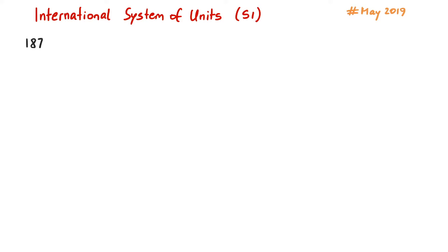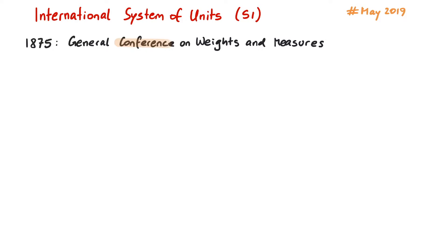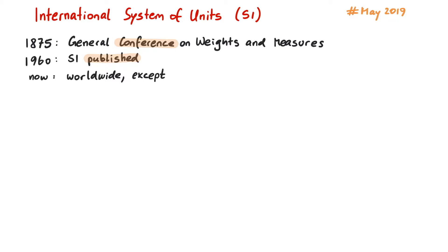It all started in 1875, when the General Conference on Weights and Measures decided to bring together many international organizations to work on a clear and concise system to write down measurements. This SI system was published in 1960 and since then has been established worldwide, except for three small rebellious countries: Liberia, Myanmar, and the United States of America.